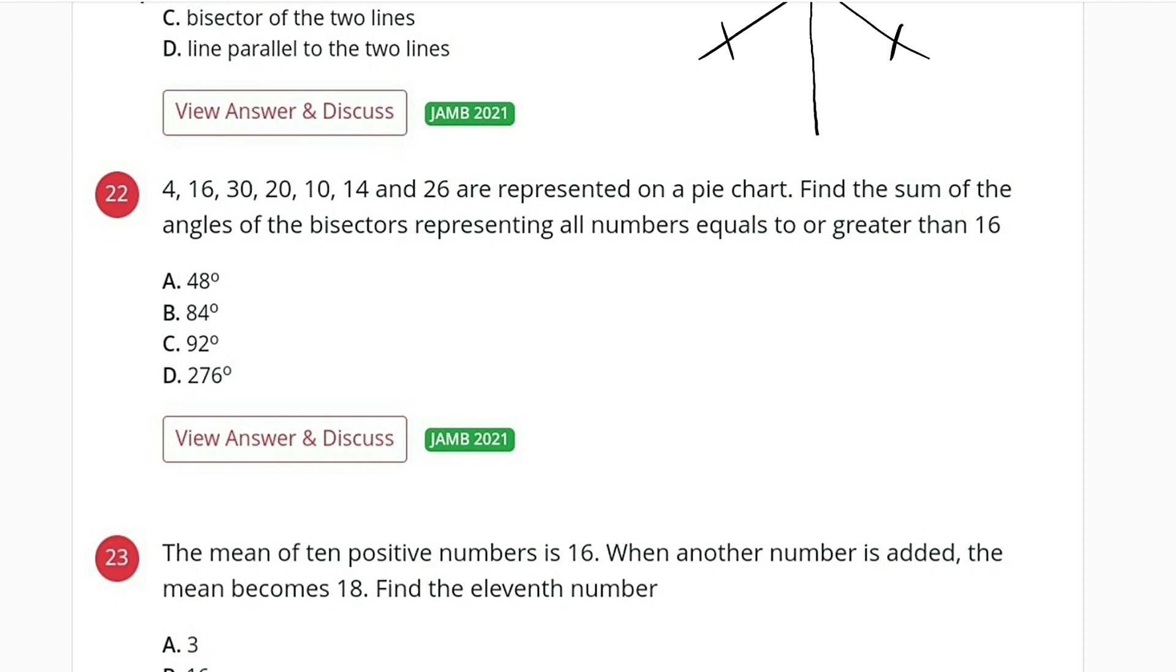So let me circle numbers that are equal to and greater than 16. We have one here, two here, three, and four. These are the numbers, so we need to find angles of these numbers and sum them together.